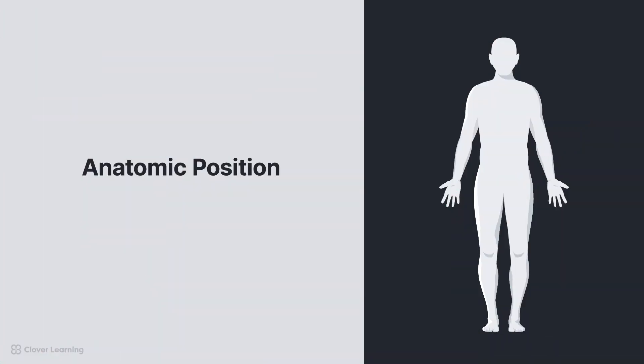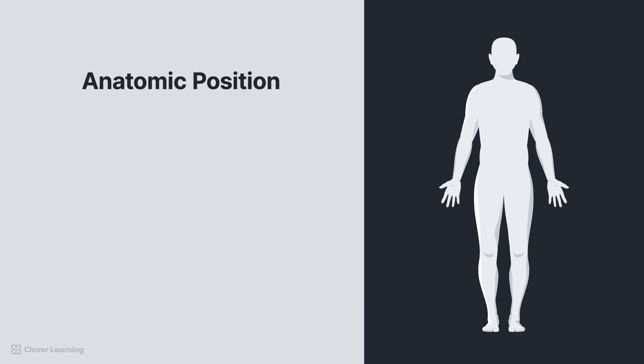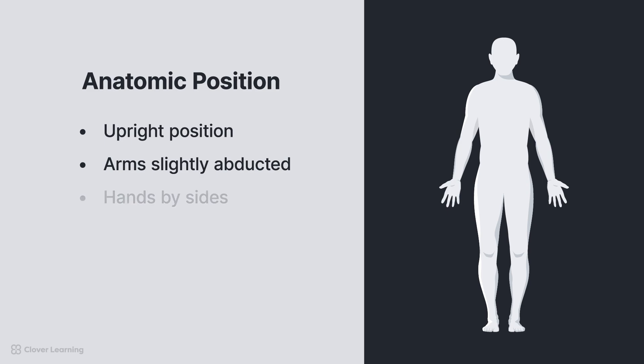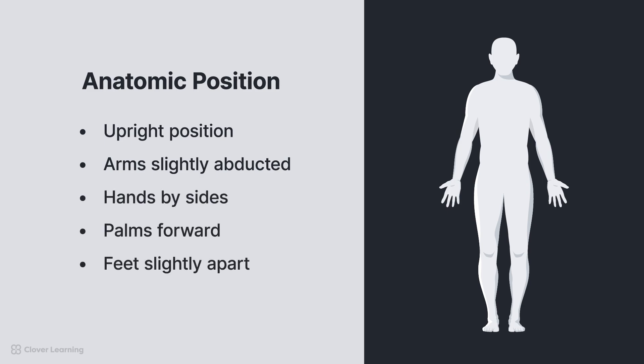As you may recall from the Body Planes, Surfaces, and Landmarks lesson, anatomic position is the reference position for all planes, surfaces, and directional terms. Anatomic position is an upright position with arms slightly abducted, hands by the sides, palms forward, feet slightly apart, head directed straight ahead. This is the basis for radiographic projections.